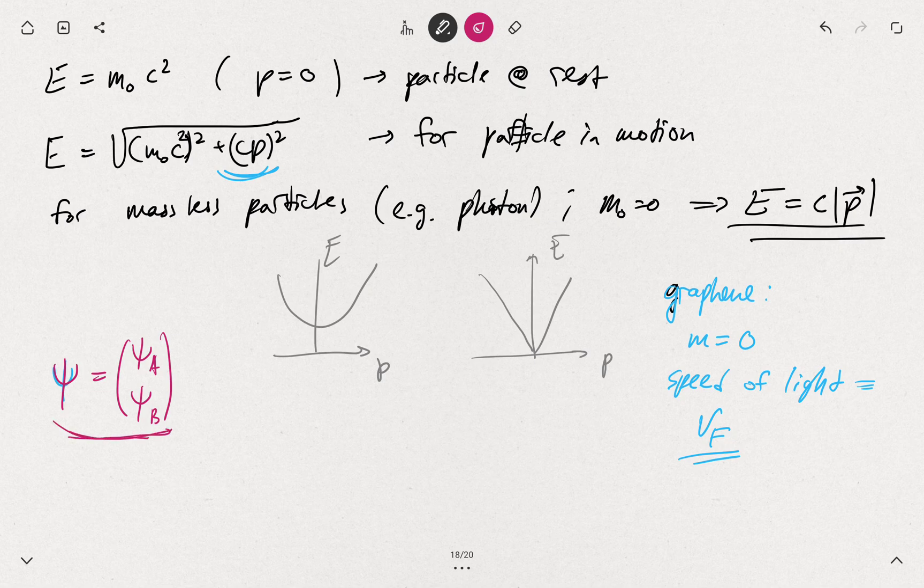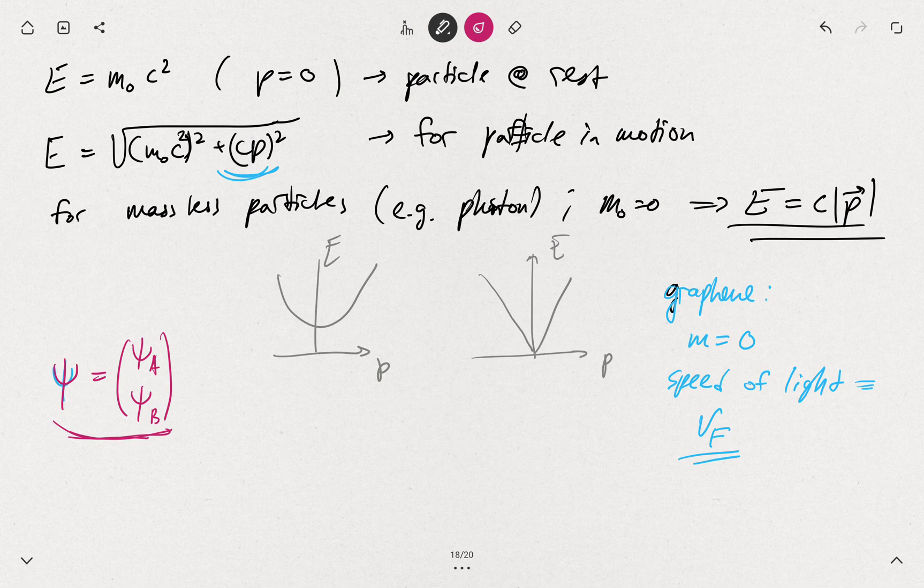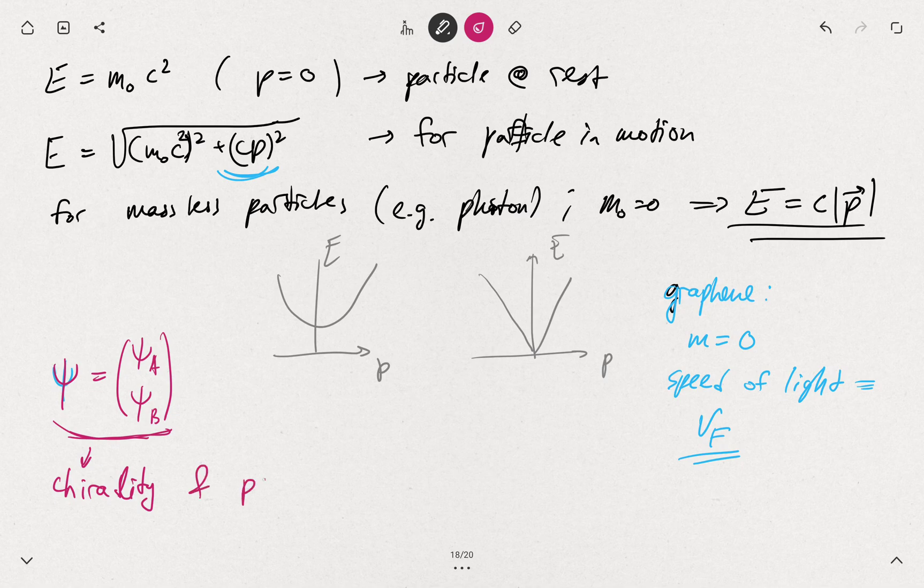Because it has the same shape as the Dirac solution to the Klein-Gordon equation, there's also similar properties which we will discuss further, namely chirality and the pseudospin.